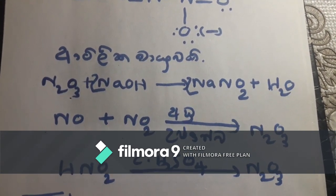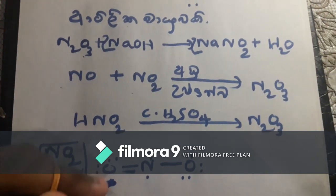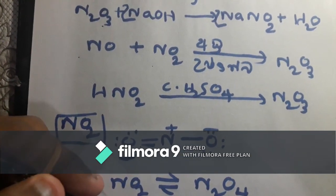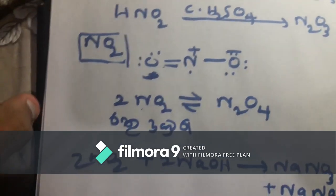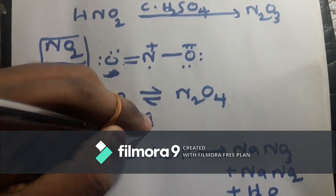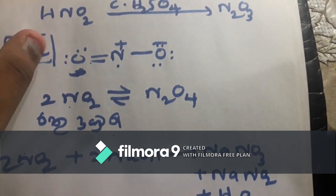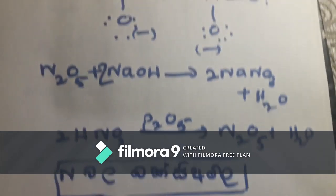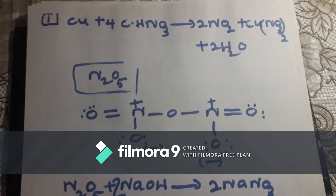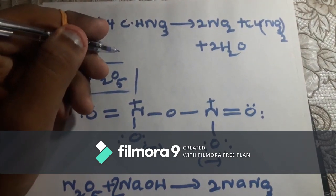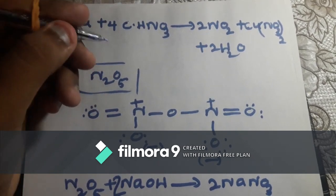HNO2, H2SO4 is known as N2O3. This is the view of N2O4. This is the case of N2O2. The case of sodium nitrate, and the case of NO2.